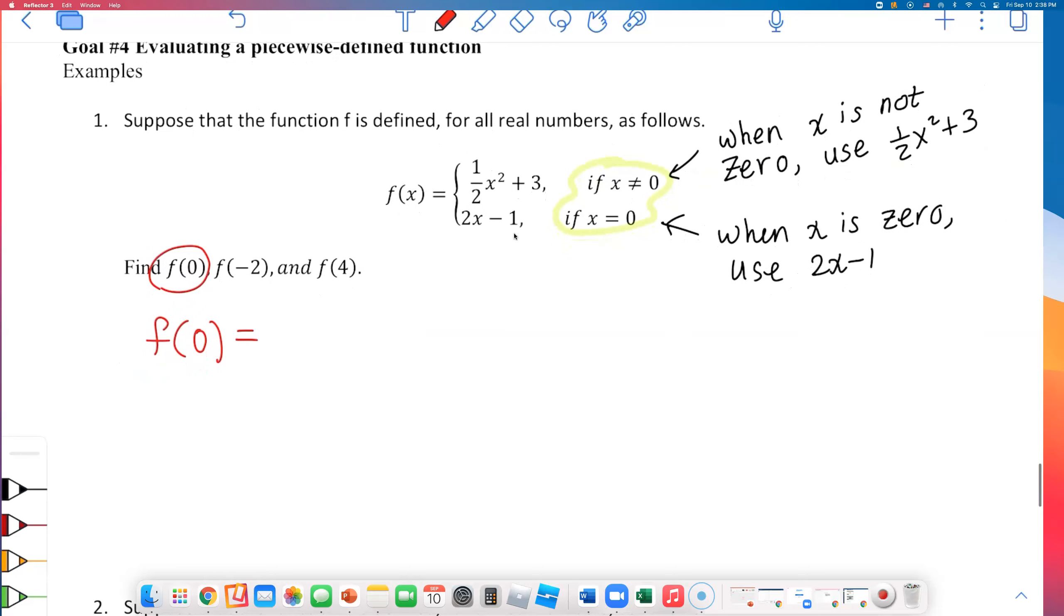Starting with the first one, f of 0. Where do I need to plug this in? Well, they did just say when X is 0, use 2X minus 1. So I'll plug that 0 in here. 2 times 0 minus 1, which is 0 minus 1, which is negative 1. So the first answer is negative 1. So the thing about piecewise function, evaluating it is, you need to decide which piece that you're going to plug it into by carefully looking at the inequalities and the equations that they are telling you over here.